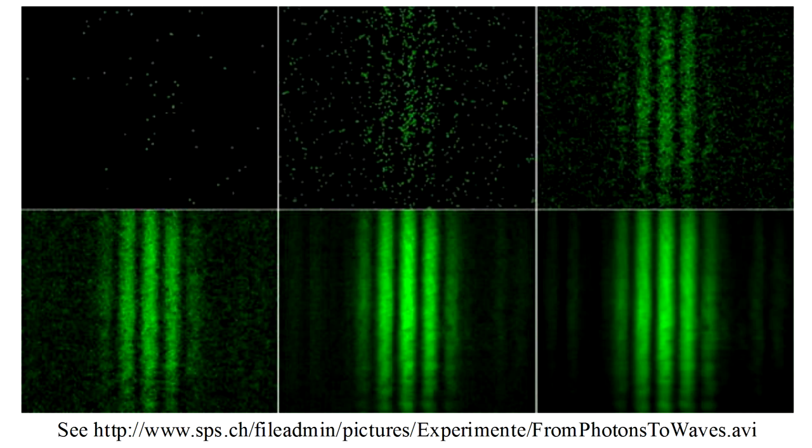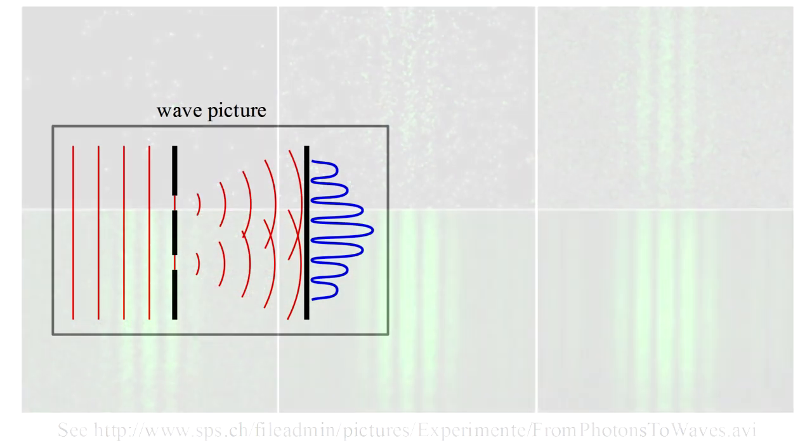The light energy does indeed arrive at the image in discrete photon packets at specific places at specific times. Yet somehow the photons, quote, know how to arrange their arrivals so that after some time the average effect of a great many photons is to create a wave interference pattern.